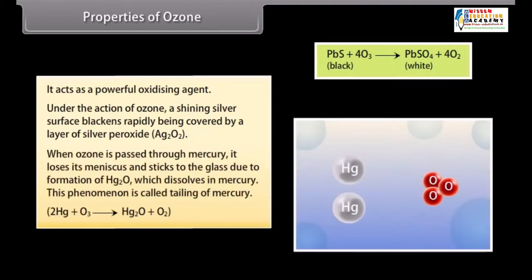When ozone is passed through mercury, it loses its meniscus and sticks to the glass due to formation of Hg2O which dissolves in mercury. This phenomenon is called tailing of mercury.